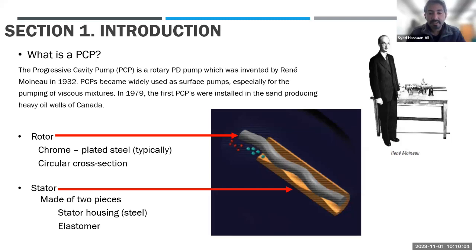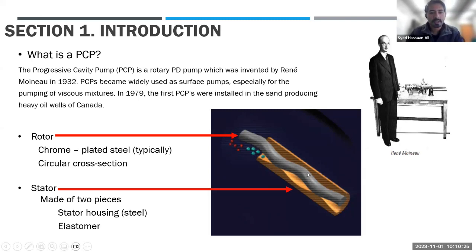It's a very simple system with just one moving component — the rotor. The rotor is a helico-axial rotor deployed in a double-axial stator. The rotor is the moving component and the stator is stationary. The rotor is usually made of metal with chrome plating, while the stator — the outside casing — is made of a tube with an elastomer injected into it. That elastomer forms the double helical profile in which the rotor will move.